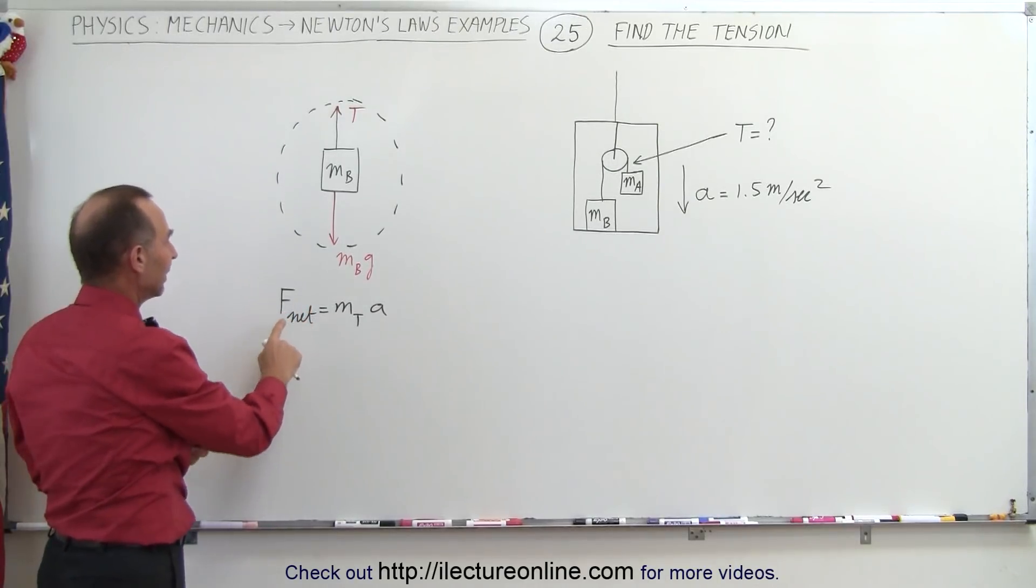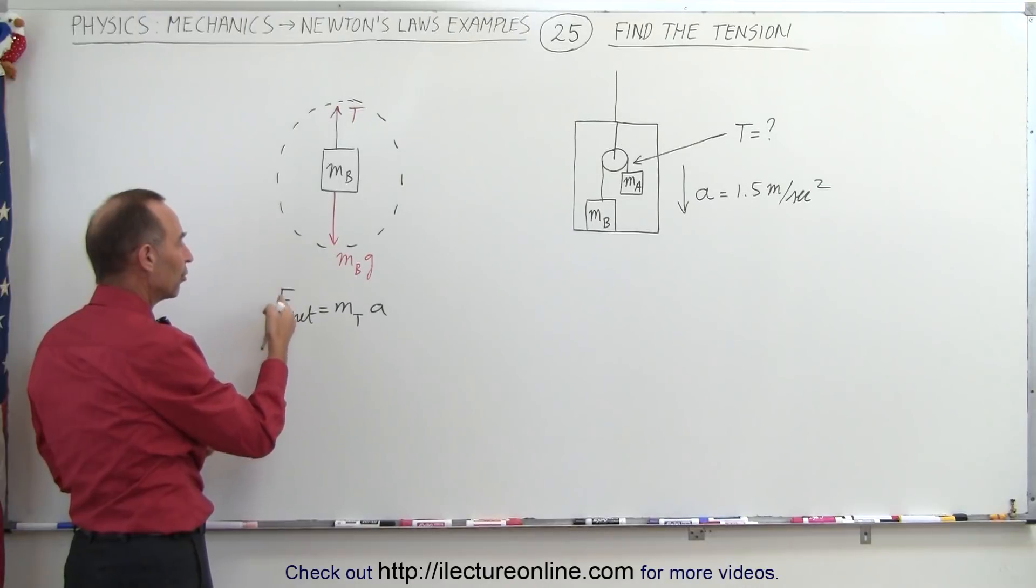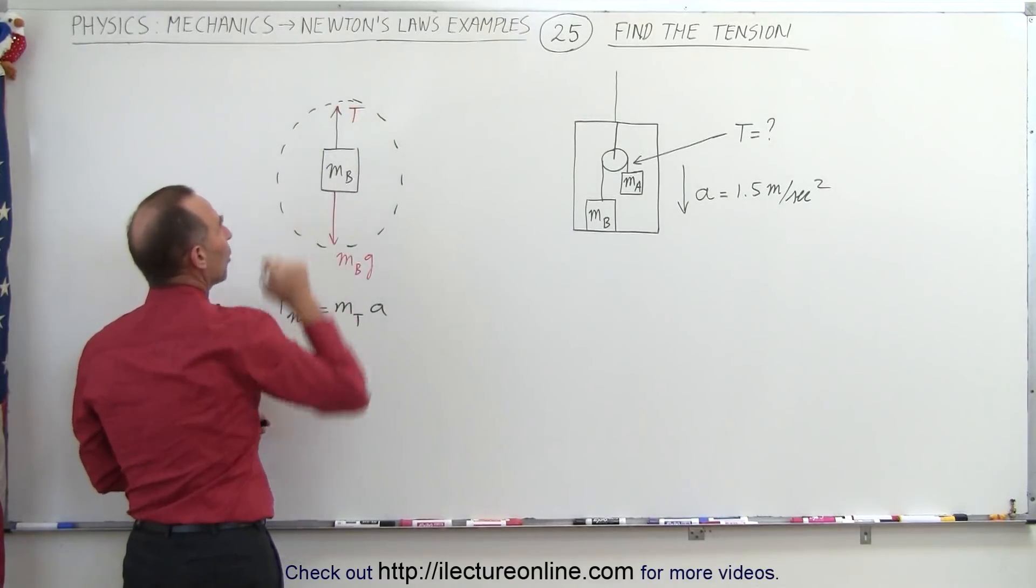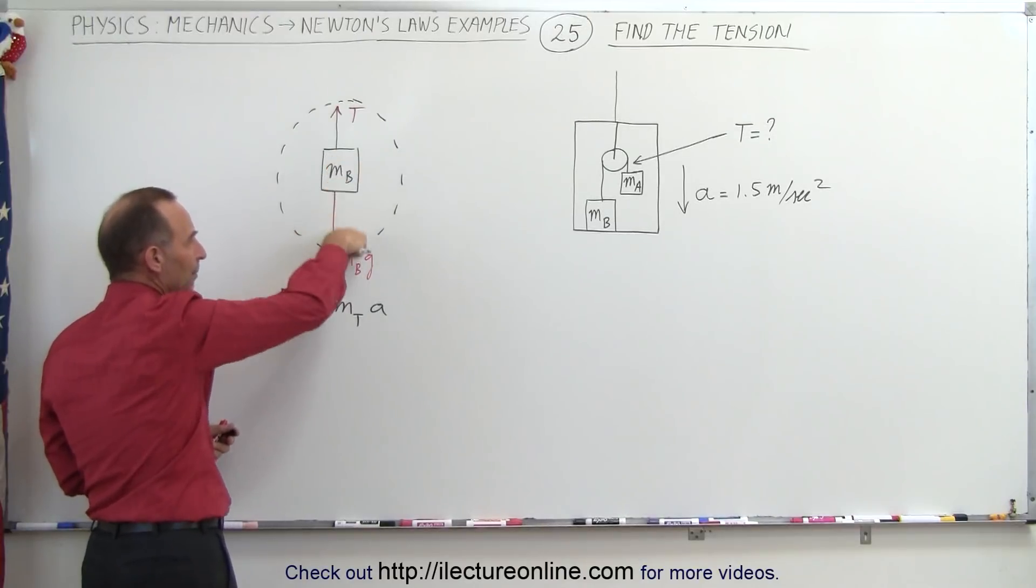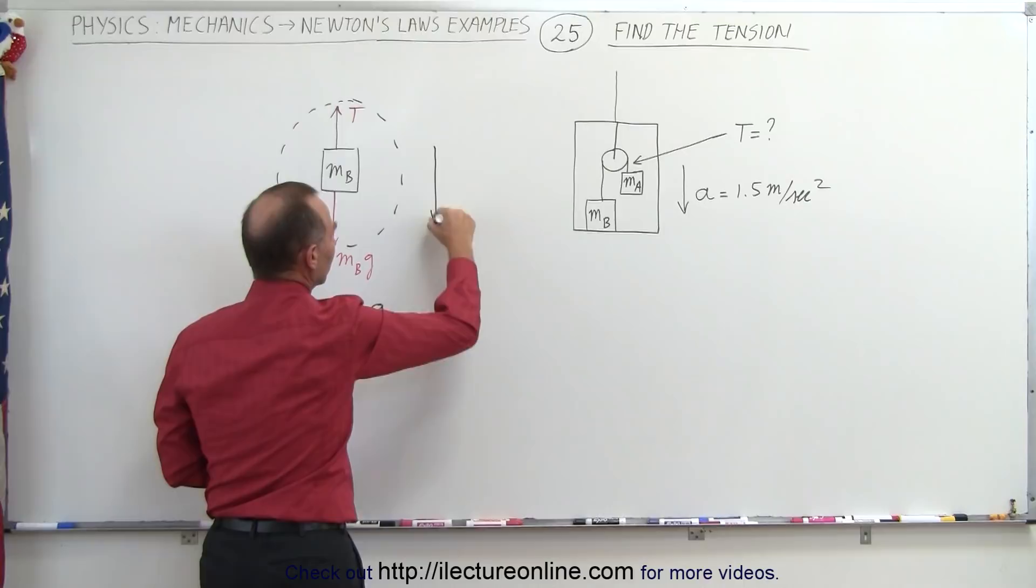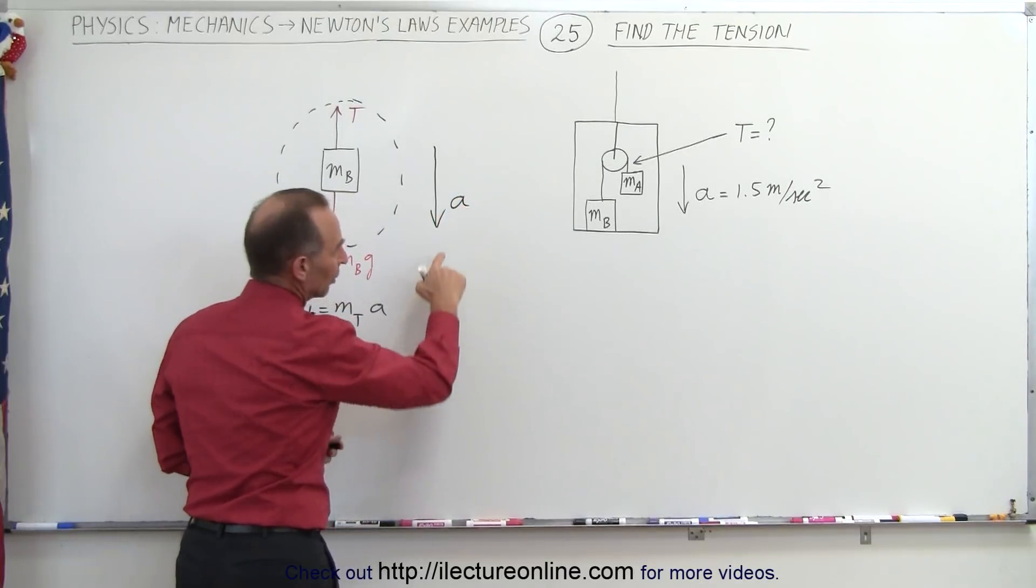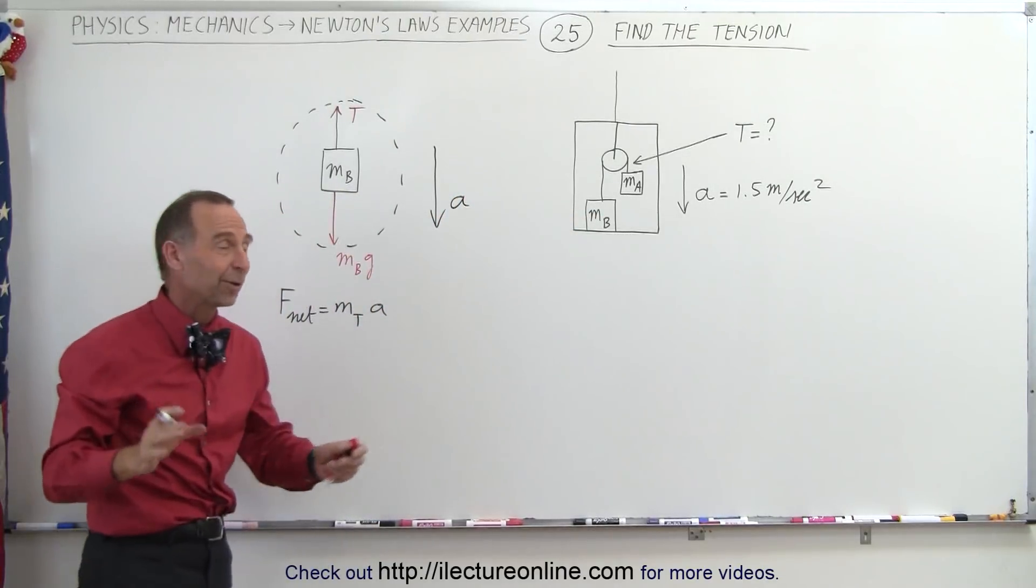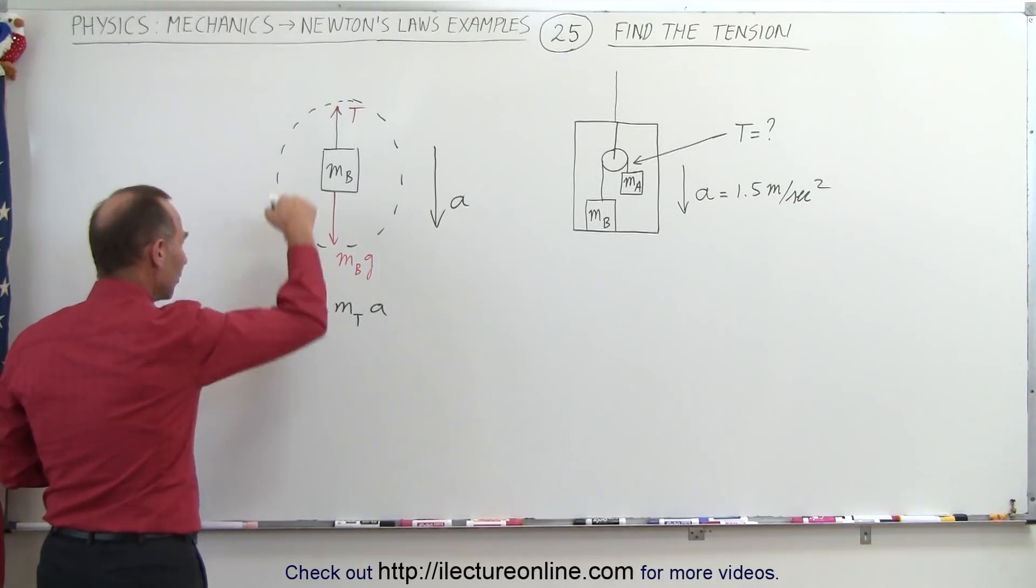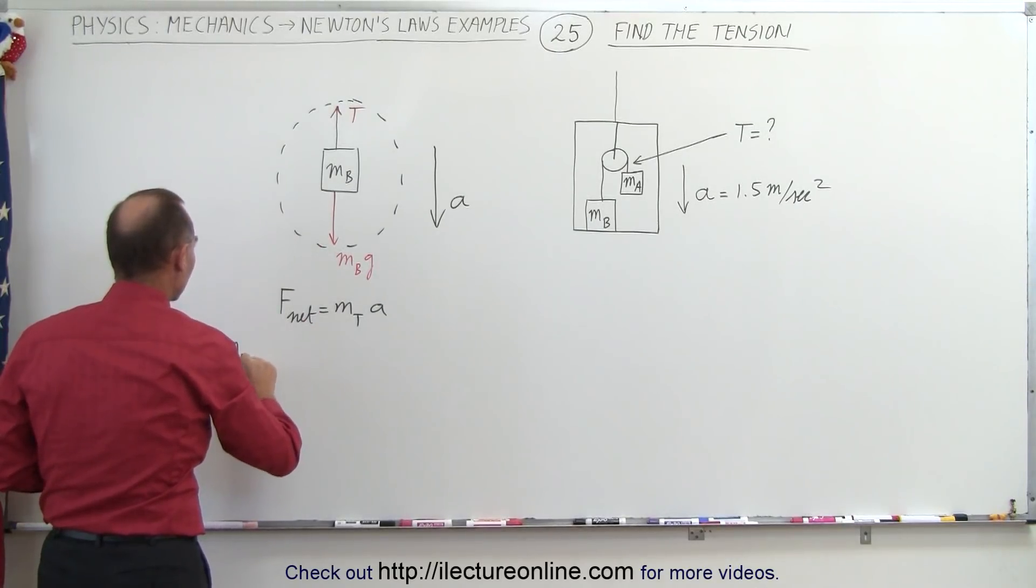So what we can then do is, the net force is going to be all the forces aiding the acceleration minus all the forces that are opposing the acceleration. So since m_b*g is in the same direction of the acceleration—we're told that the acceleration is downward—we can then say that the force aiding the acceleration is m_b*g.